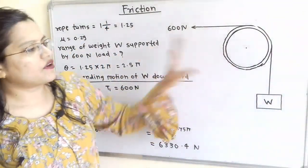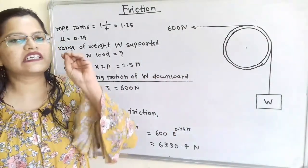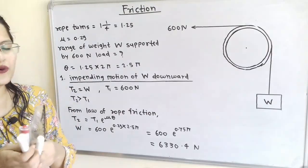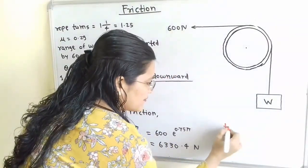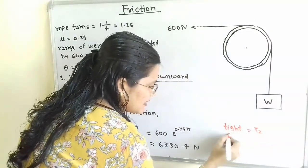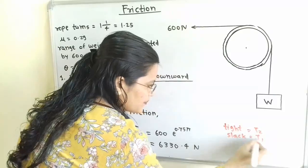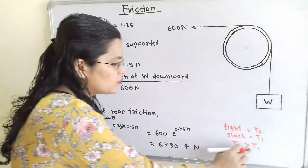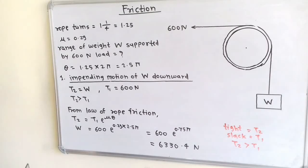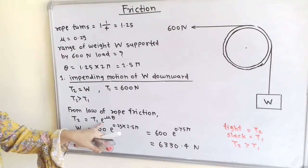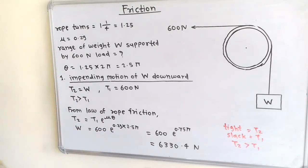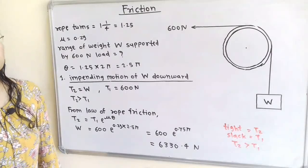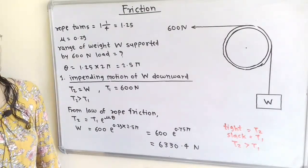In the case of rope friction, there are two sides: the tight side and the slack side. The tight side is called T2 and the slack side is called T1, and T2 is always greater than T1. The relation between T2 and T1 is given by the law of rope friction: T2 = T1 × e^(μθ), where θ is the angle of contact of the rope with the disc, and θ must always be in radians.